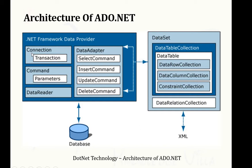The Connection class or object is used to provide the connection string and establish a connection between your application and the database. Second, the Command object is used to provide SQL commands like INSERT, UPDATE, DELETE, and SELECT — these SQL commands are executed using the Command object. Third, the DataReader is the class and object used to read data from the database.